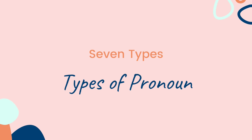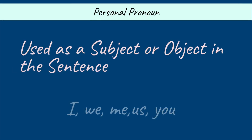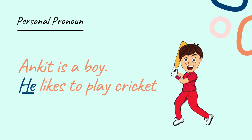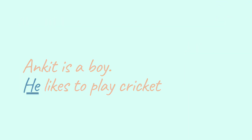Now let's look into the types of pronouns. Pronouns are mainly divided into seven types. Number one: Personal pronoun. It is used as a subject or object in the sentence and is associated with a particular person or thing. Examples: I, we, me, us, you. For example: 'Ankit is a boy. He likes to play cricket.' Here, the pronoun 'he' is used as the subject of the sentence.